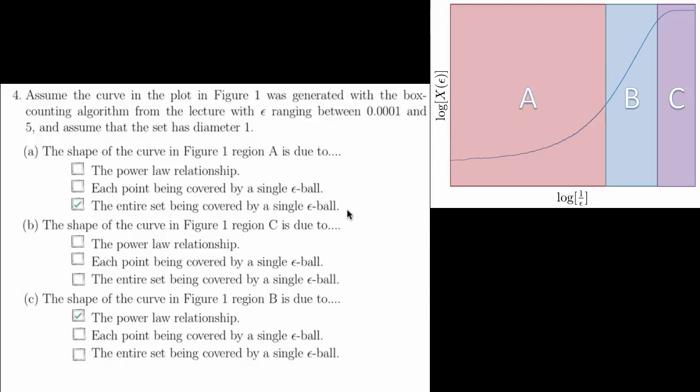In region C, on the other hand, epsilon is too small, and in this case, each point is being covered by a single epsilon ball. Regions A and C are numerical artifacts of the algorithm and not important to this calculation. Region B, the so-called scaling region of this power law relationship, is usually what you care about when dealing with this kind of plot.